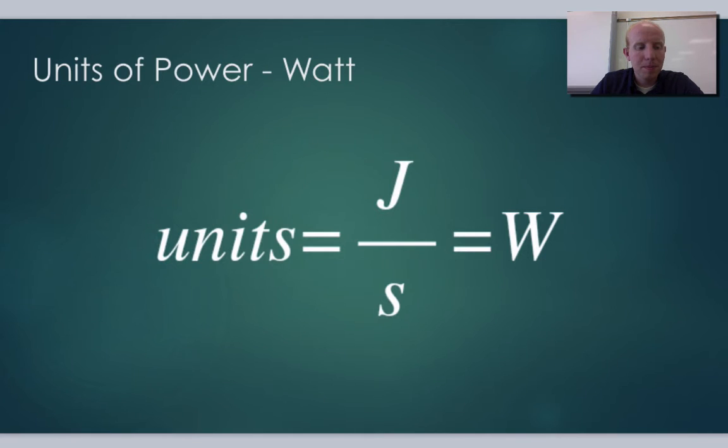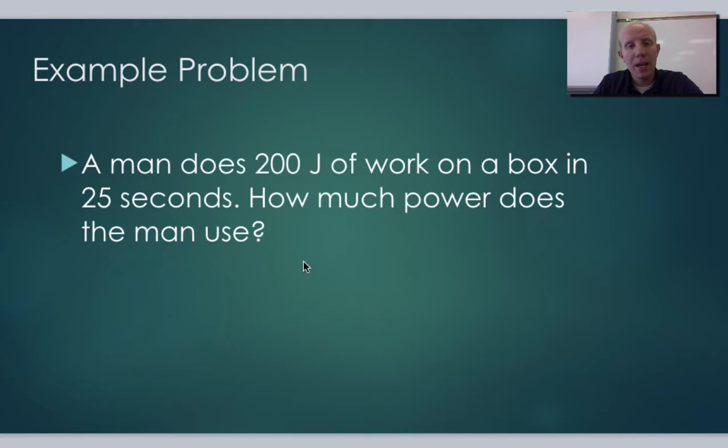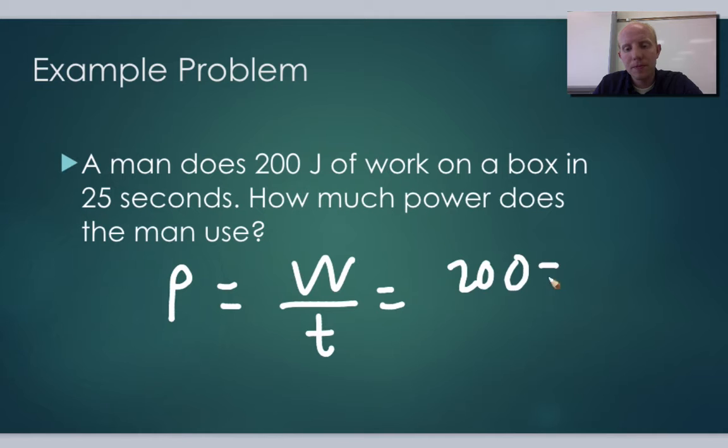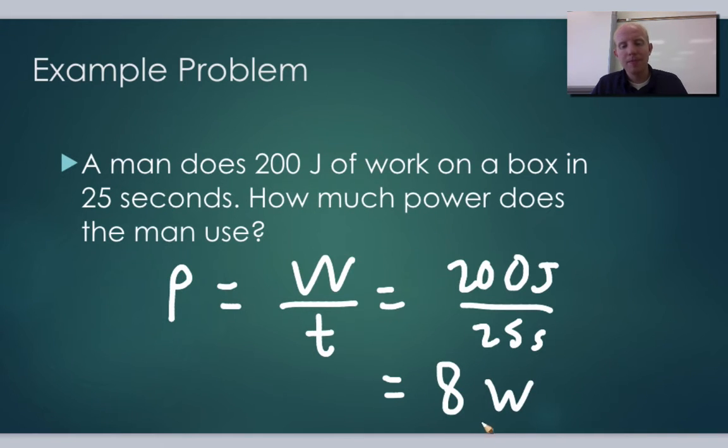Let's do an example problem. A man does 200 joules of work on a box in 25 seconds. How much power does the man use? Well, we just say power equals work over time. That will be 200 joules in 25 seconds. Let's put that into our calculator, and we get that the power is 8 watts. He's using 8 joules every second.